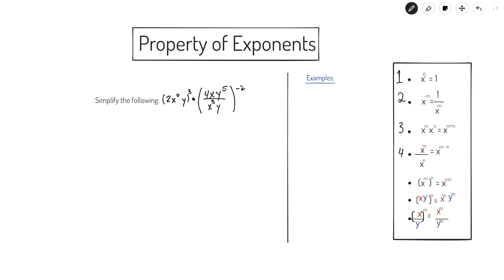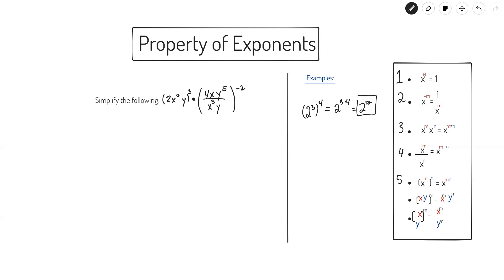The fifth property says that when I have something to a power M and I put that whole thing to another power N, that's really just the base to the product of both powers M times N. That's only when I am powering a power — I multiply the two powers to get the new power. For example, 2 to the third power, all of that to the fourth power, is just 2 to the 3 times 4 power, which is 2 to the twelfth power.